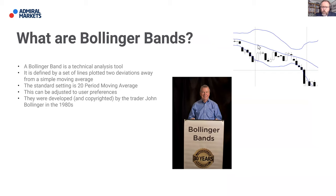What are Bollinger Bands? It's a technical analysis tool defined by a set of lines plotted two standard deviations away from a simple moving average. The standard setting is a 20-period moving average. Some traders change those settings, and that's absolutely fine, but today we're just going to work with the standard settings on MT4 and MT5. They were developed and copyrighted by the trader John Bollinger in the 1980s.